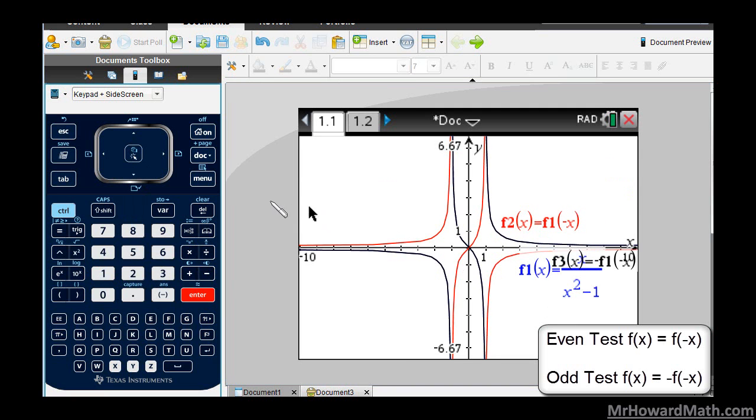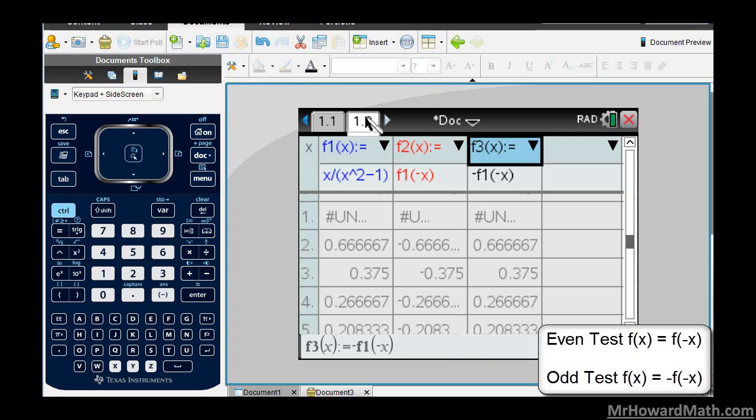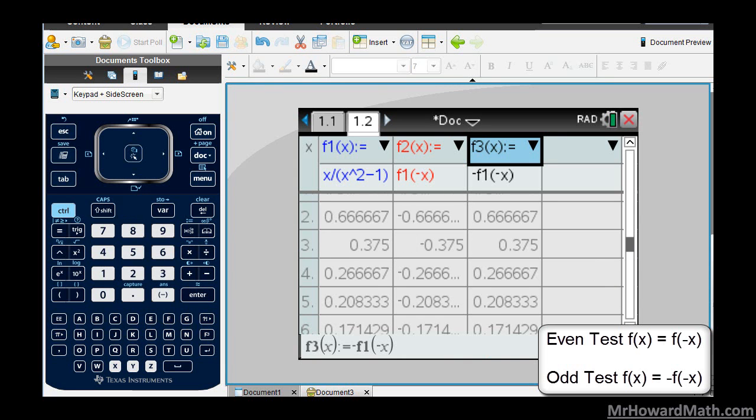A lot going on in the graph. It's a little hard to see, so that table is always easier. We have undefined there when X is 1. So let's look down here. These are matching. F1 is matching function 3, so that means it is odd. The original F of X function is matching the negative F of negative X, which is the odd test. Therefore I can say, I've checked it, it is odd.